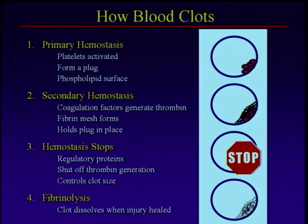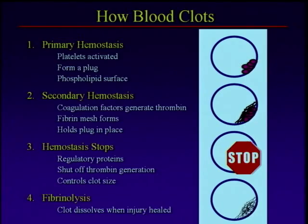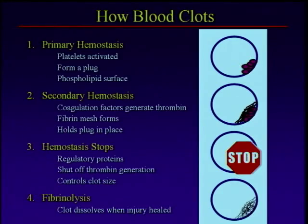The second thing that's important is these platelets then provide the surface upon which the coagulation proteins interact with each other to form a clot. That's the second step, or secondary hemostasis. It's a really complicated series of reactions, but the end result is the generation of what we call thrombin. Thrombin is this sticky glue-like stuff that lays down on top of that platelet plug and keeps that clot in place long enough for the tissue underneath to heal.